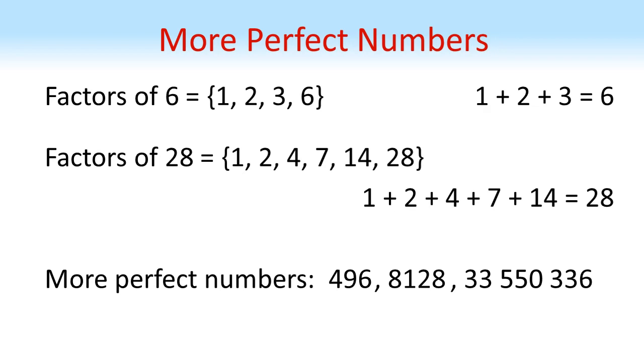Using supercomputers, mathematicians have found some incredibly large perfect numbers, the largest of which has almost 50 million digits. However, nobody knows if there is a largest perfect number or if there are infinitely many. Another interesting fact is that mathematicians are yet to find an odd perfect number. Nobody knows if such a thing exists or not.